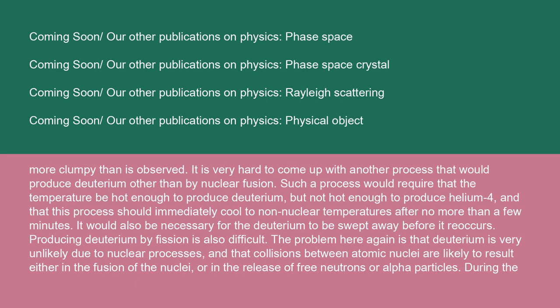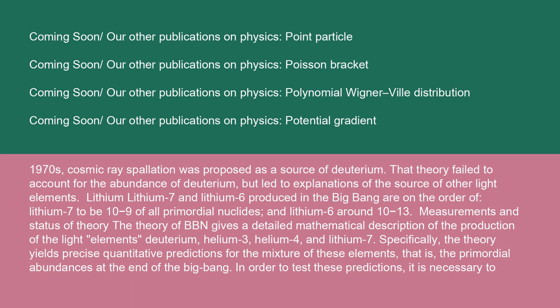It is very hard to come up with another process that would produce deuterium other than by nuclear fusion. Such a process would require that the temperature be hot enough to produce deuterium, but not hot enough to produce helium-4, and that this process should immediately cool to non-nuclear temperatures after no more than a few minutes. It would also be necessary for the deuterium to be swept away before it reoccurs. Producing deuterium by fission is also difficult. The problem here again is that deuterium is very unlikely due to nuclear processes, and that collisions between atomic nuclei are likely to result either in the fusion of the nuclei or in the release of free neutrons or alpha particles. During the 1970s, cosmic ray spallation was proposed as a source of deuterium. That theory failed to account for the abundance of deuterium, but led to explanations of the source of other light elements.